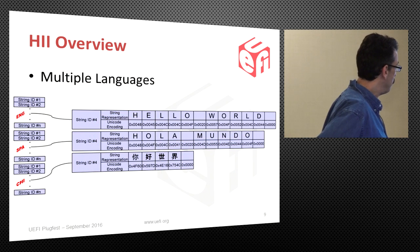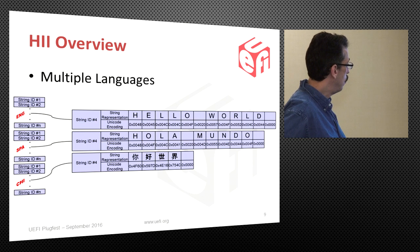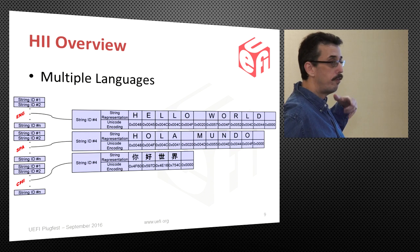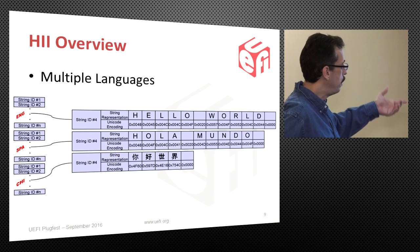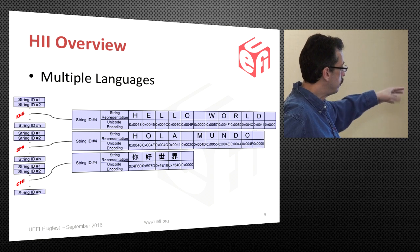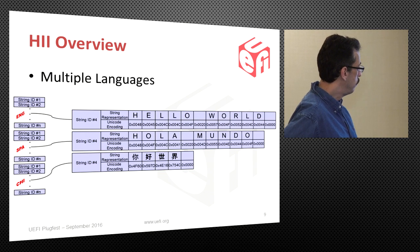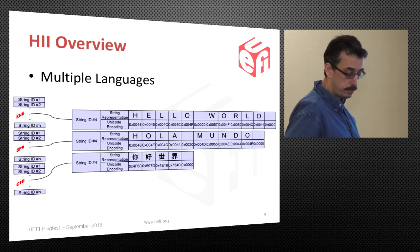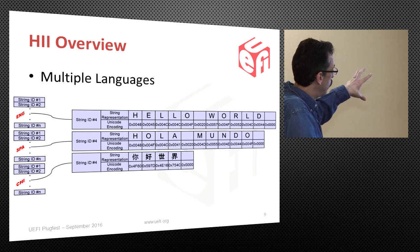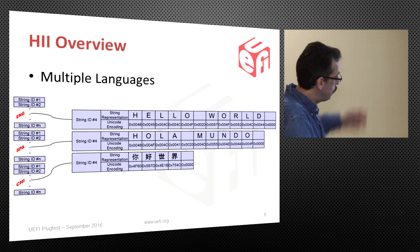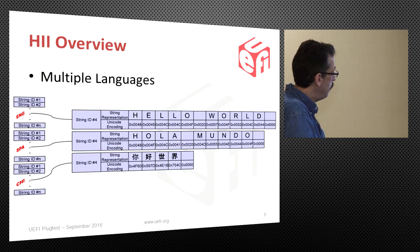Obviously we have strings - it wouldn't be a very interesting user interface without them. We have this concept of supporting multiple languages. We tokenize all the strings such that if you're referring to string number one, whether that's in English or in Spanish, the meaning is the same - 'hello world' and 'hola mundo' are the same meaning. This allows the IFR opcode to refer to a single token number in the string, meaning the same thing regardless of which language you're displaying. If we have string token number four, each language's string package - English, Spanish, Chinese - can get rendered with identical meaning.